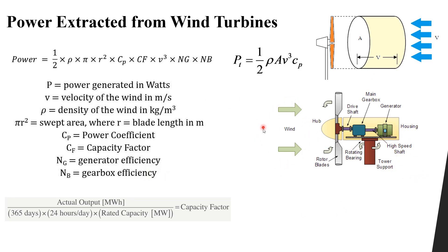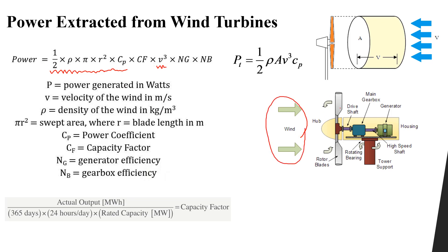Now if we want to find the power going from the generator to the transmission system or transformer, the total output power is equal to one-half rho multiplied by the swept area pi r squared, multiplied by Cp the power coefficient, multiplied by v cubed. This part — rho, r squared, Cp, and v cubed — represents the power from the wind absorbed by the wind turbine, giving us the power of the turbine: one-half rho pi r squared times Cp times v cubed.